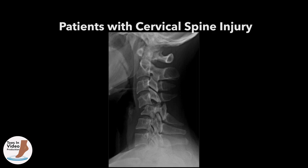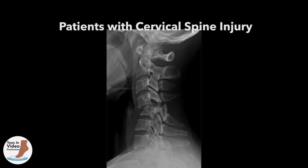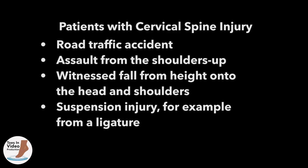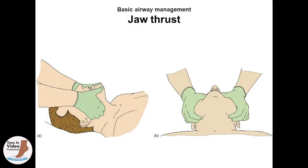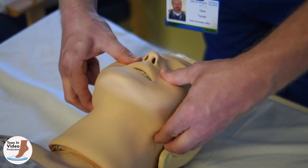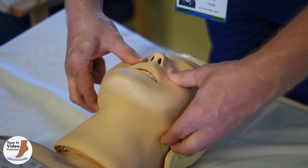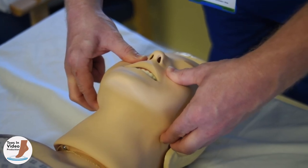Because this manoeuvre involves extension of the cervical spine, it is not safe to perform when the patient's history or suspected mechanism of injury leads to reasonable suspicion of C-spine fracture, as manipulating this fracture may cause further harm. Such circumstances may include road traffic accidents, assault from the shoulders up, witnessed fall from height onto the head and shoulders, or suspension injury from a ligature. In these cases, it is safer to use the jaw thrust manoeuvre, placing two fingers under the corner of the jaw and pushing the jaw vertically up towards the ceiling. This must be used with caution in patients with known or suspected facial fractures, with special care taken to avoid extending or flexing the neck.